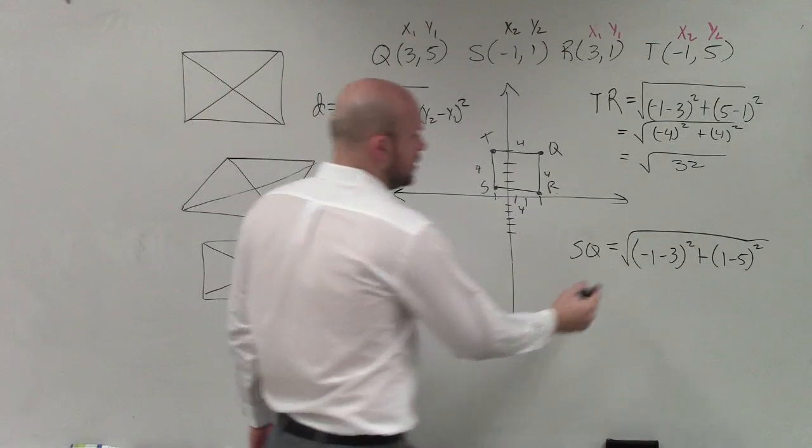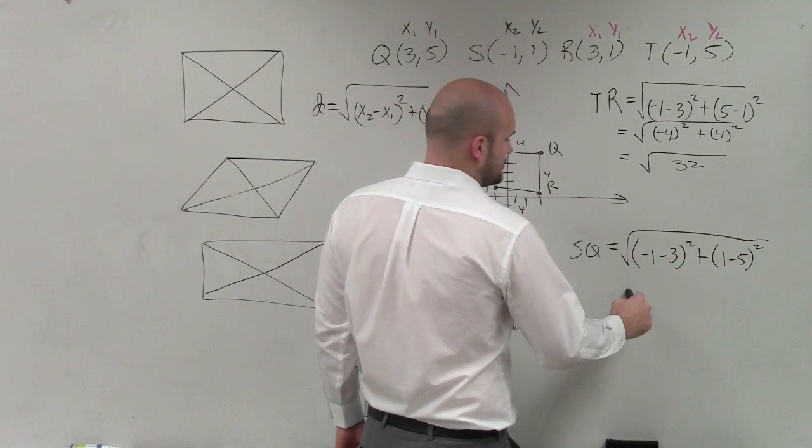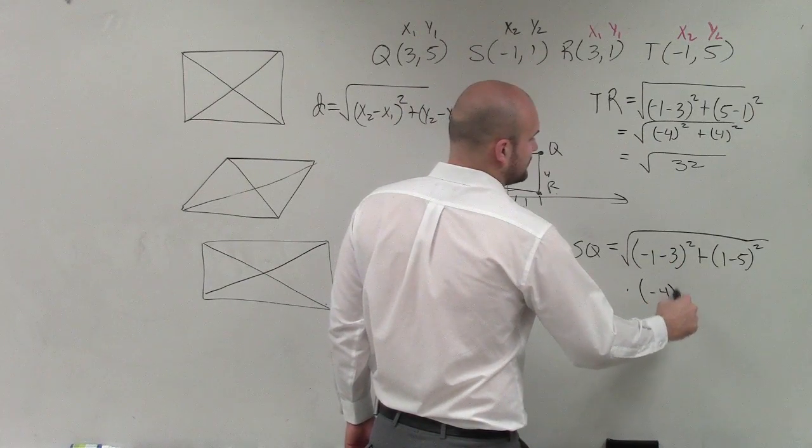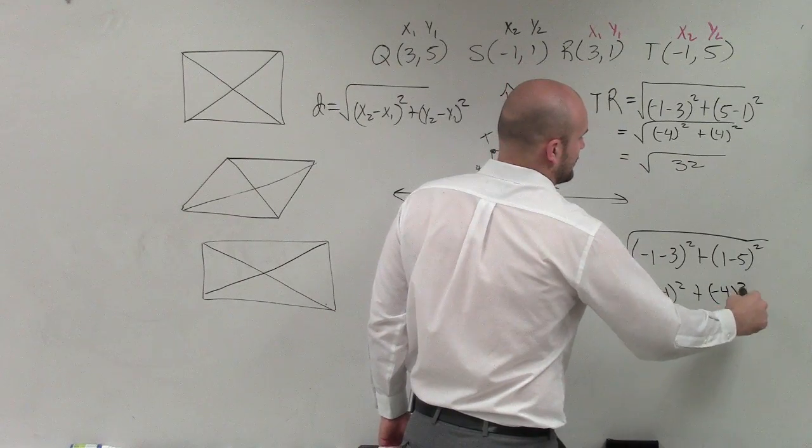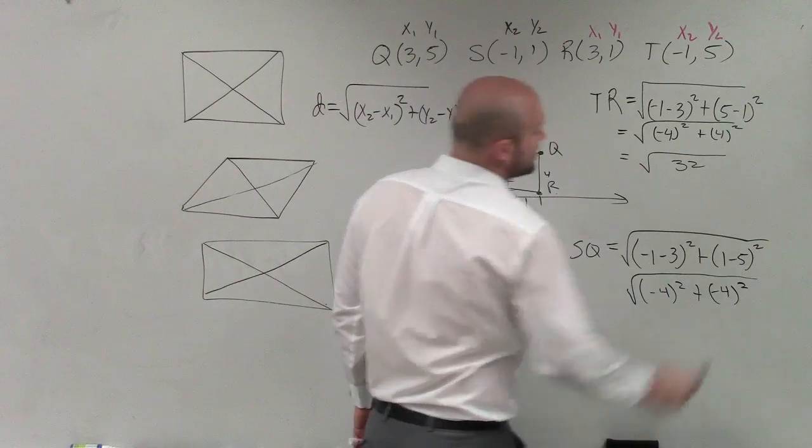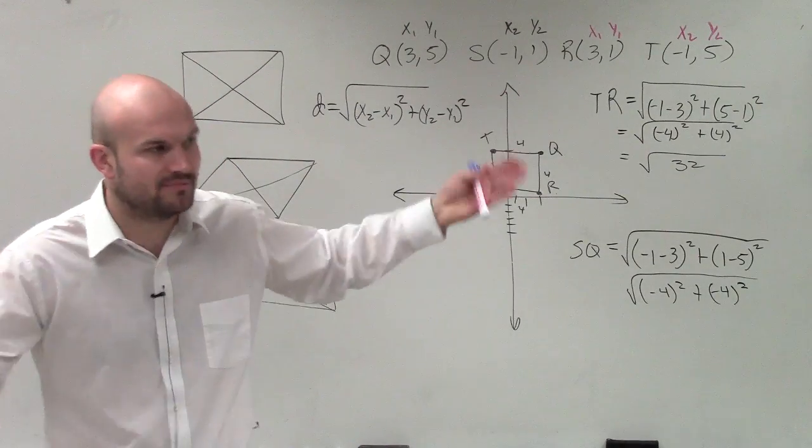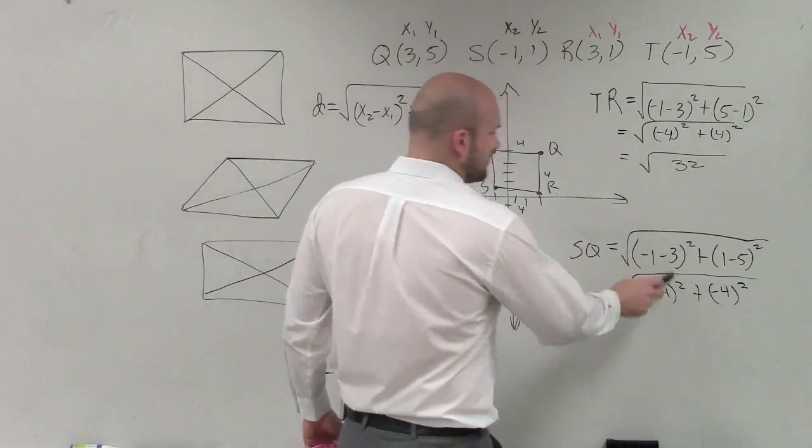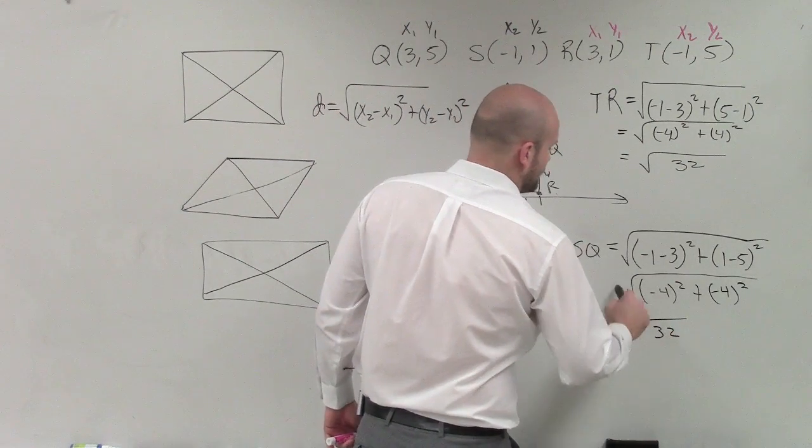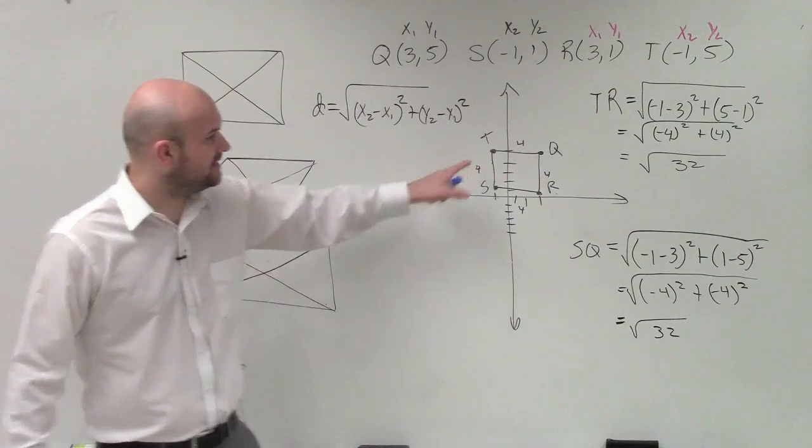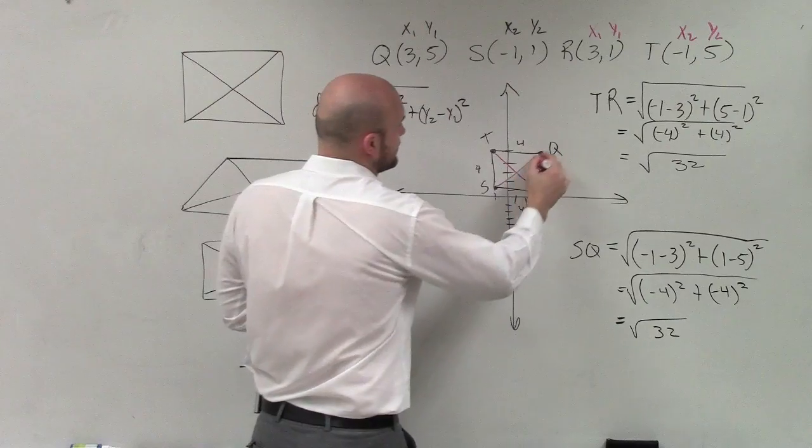OK, over here, negative 1 minus 3 is negative 4, so I have negative 4 squared here. 1 minus 5 is negative 4 squared. Now remember, when you're squaring a negative number, that means you're multiplying that negative number by itself, so negative 4 times negative 4 would be positive 16. So therefore, again, we have 16 plus 16, which is 32.